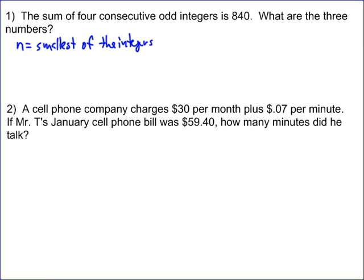And because n is the smallest of the integers, the next integer after that, the next consecutive odd integer - well, if you think of an example, if we started with 7, the next one would be 9. And the way you get from 7 to 9 is you add 2. The way you get from 9 to 11 is you add 2. The way you get from 11 to 13 is you add 2.